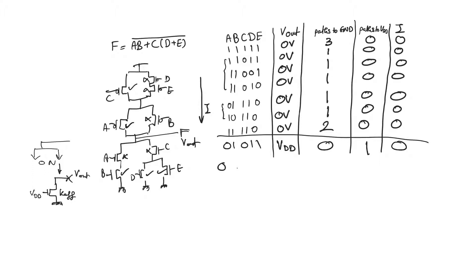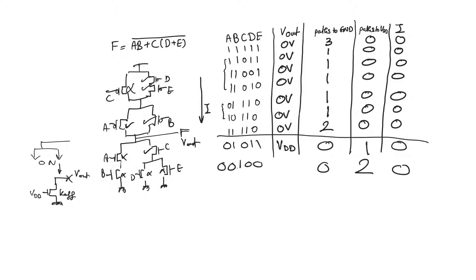Let's look at the input case 0,0,1,0,0. In the pull-down network: A is cut off, B is cut off, C is on, D and E are cut off. In the pull-up network: A is on, B is on, C is off, D and E are on. We have zero paths available to ground, two paths available to VDD — through A, D, and E and through B, D, and E. The current flowing is zero because the pull-down network is cut off, and the output will be VDD.